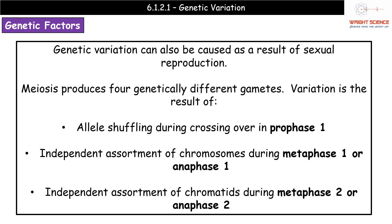The first way we get variation is allele shuffling, which happens during prophase 1 through the process of crossing over, where parts of chromosomes are exchanged with each other. The second way is during metaphase 1 or anaphase 1, where we get the independent assortment of chromosomes. The chromosomes line up along the equator of the cell, but how they line up is completely random — hence independent assortment.